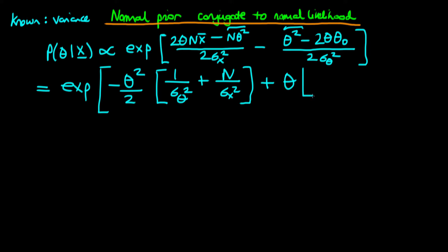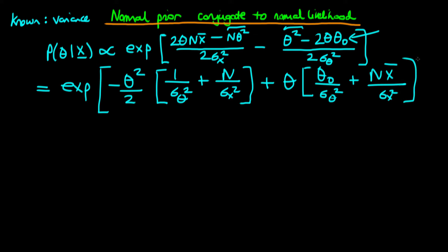If we now do the same for powers of just theta, we get plus theta. This last term here is going to contribute a theta zero divided through by sigma theta squared, because the twos will cancel with one another. Then we get plus n x-bar over sigma x squared coming from the first term. I've reordered these two terms so that in both cases we have some term due to the prior first, and then some term due to the likelihood.